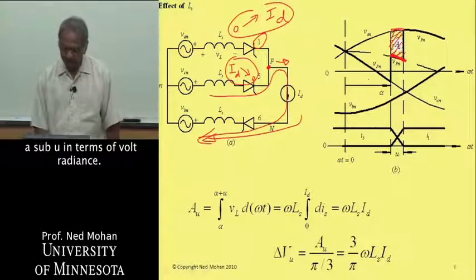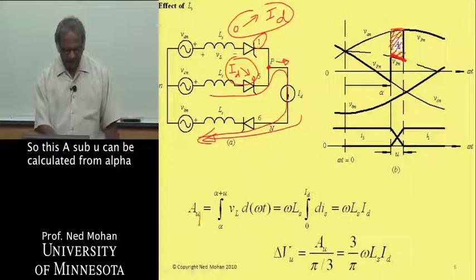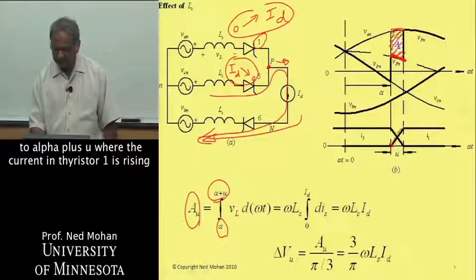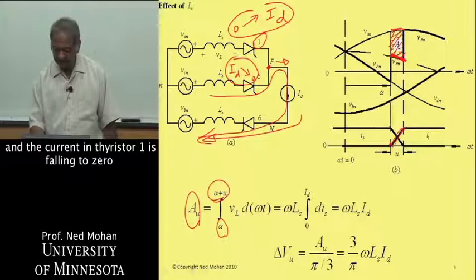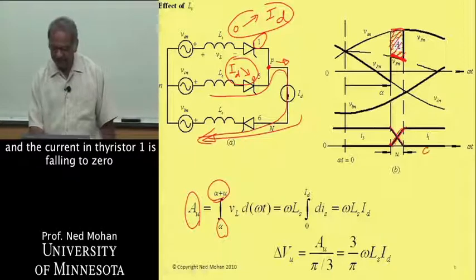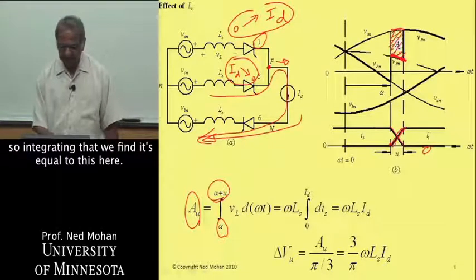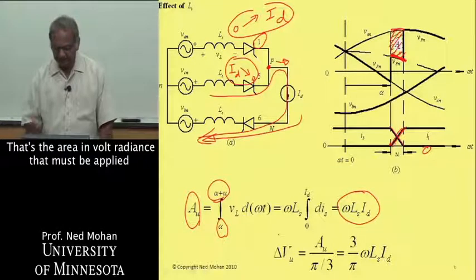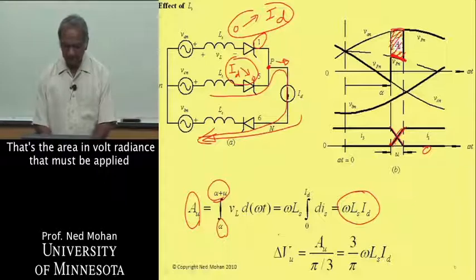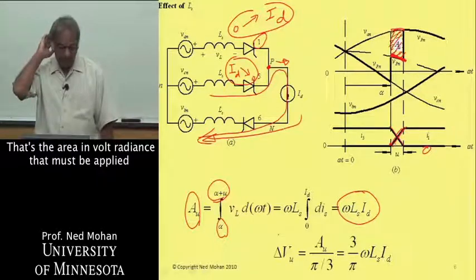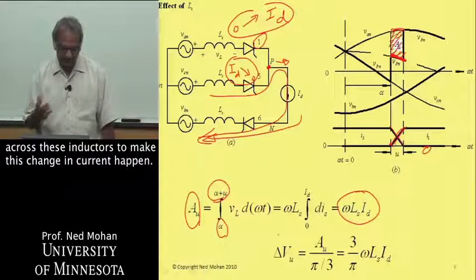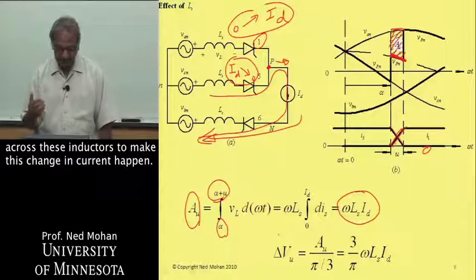This A sub u can be calculated from alpha to alpha plus u, where the current in thyristor 1 is rising and the current in thyristor 5 is falling to 0. Integrating that, we find that it's equal to this here.